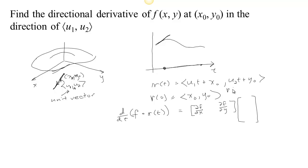Well, r'(t) is just ⟨u₁, u₂⟩. So if we take the derivative with respect to t, we get u₁ here and u₂ there. So this is our total derivative, u₁, u₂.